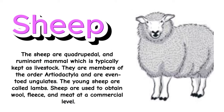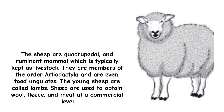Sheep. The sheep is a quadrupedal and ruminant mammal, which is typically kept as livestock. They are members of the order Artiodactyla and are even-toed ungulates. The young sheep are called lambs. Sheep are used to obtain wool, fleece, and meat at a commercial level.